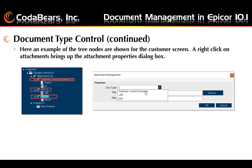For example, if you right-click on customer linked documents, that will automatically be filled in the drop-down box — the document type will automatically show customer linked documents. Then you would browse to where the document is that you want to bring into Epicor and then put in a title.